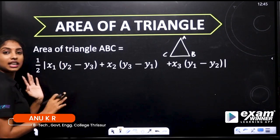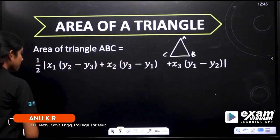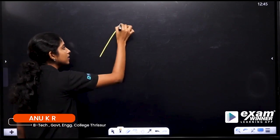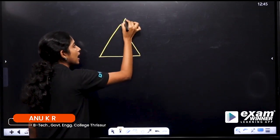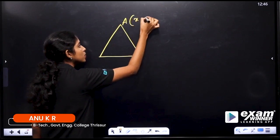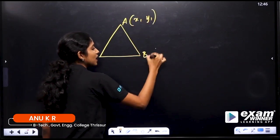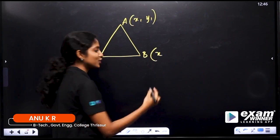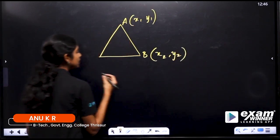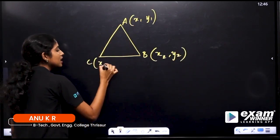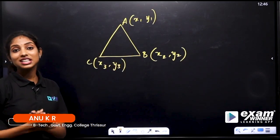We have points A, B, C — we have a triangle. We have A coordinates: x1, y1. B coordinates: x2, y2. C coordinates: x3, y3. These are the ABC coordinates — the x and y coordinates.